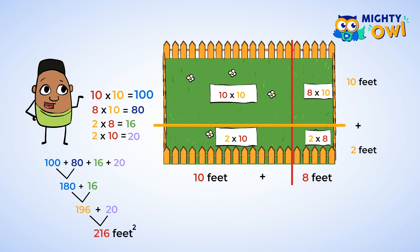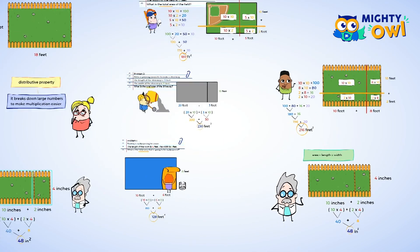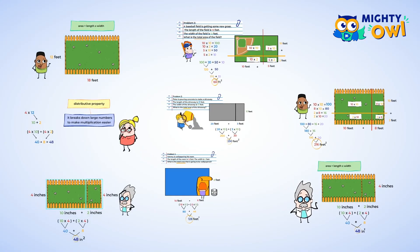That's a big yard with an area of 216 square feet. Great job combining what you already learned about the distributive property and applying it to area. You used your knowledge about being able to break apart numbers with the distributive property to help you multiply to find the area of bigger rectangles. I can't wait to see what we'll learn next — see you in the next video.